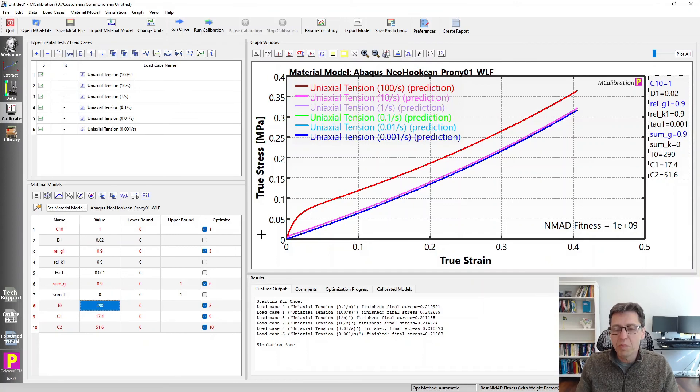The predictions are going to be taking into account the temperature that was used for each of these conditions. So if you're not familiar with the WLF equation and this type of TTS superposition, I suggest you explore it. Using MCalibration has a lot of cool features. You can kind of learn how this goes. It's a little bit surprising how strong the temperature dependence can be for these materials.